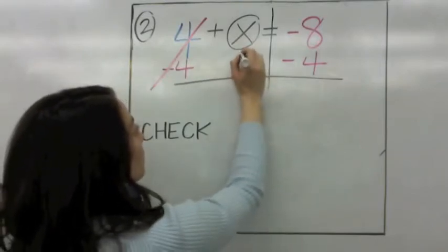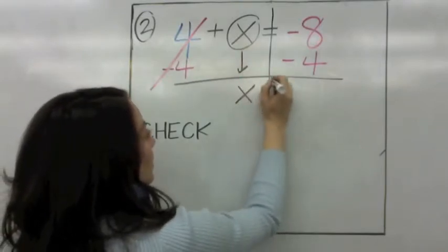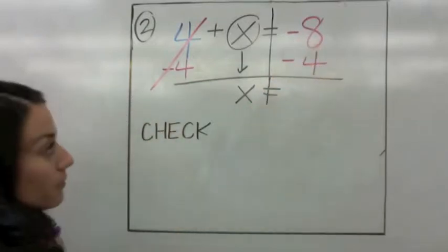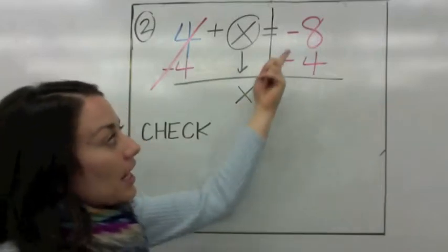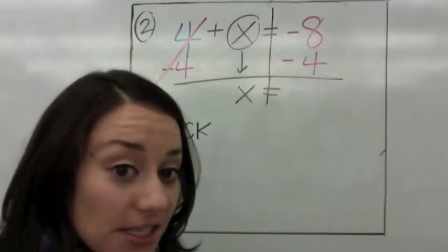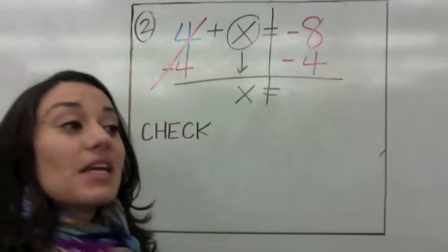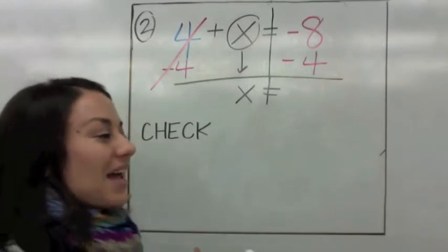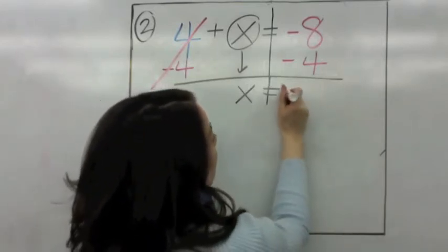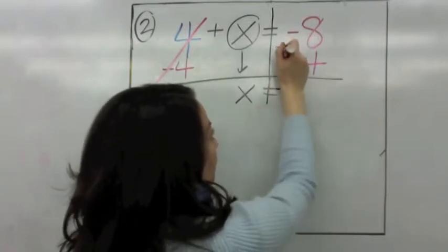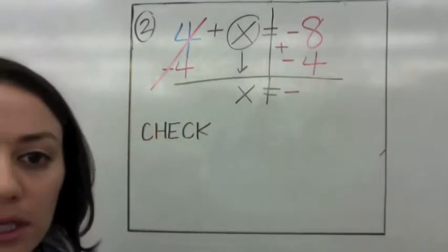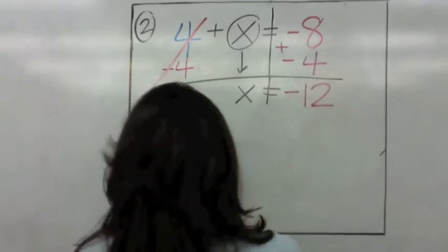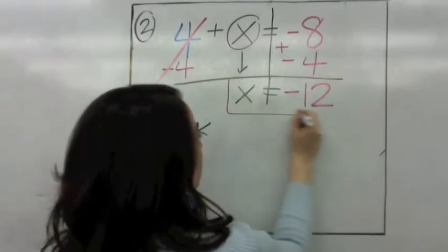Bring down the x. Now x will equal negative 8 minus 4. This is really negative 8 and negative 4 — do they have the same signs? Yes. So same signs add and keep. We're going to keep the negative and add 8 and 4: 8, 9, 10, 11, 12. So the answer is negative 12. x equals negative 12.